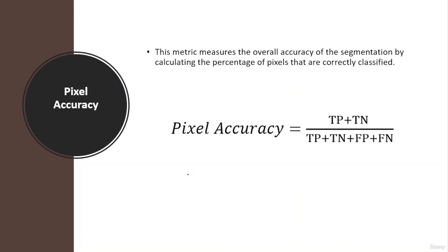What is the pixel accuracy measure? Pixel accuracy is a metric used to evaluate the performance of a semantic segmentation model. It is calculated by dividing the total number of correctly classified pixels by the total number of pixels in the image. If a model has a high pixel accuracy, it means it is able to correctly classify most of the pixels in the image. The formula is: true positive plus true negative divided by true positive plus true negative plus false positive plus false negative.